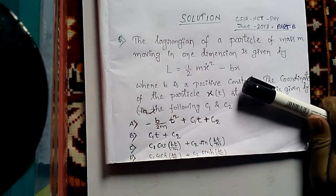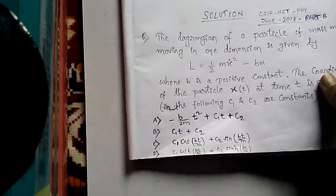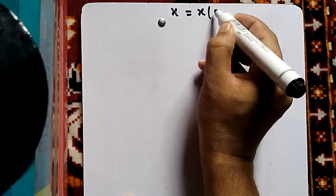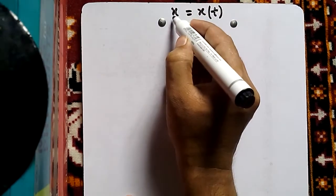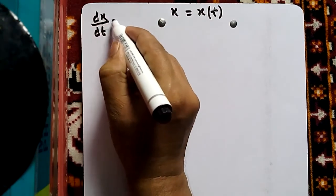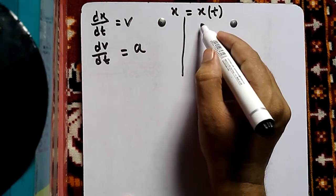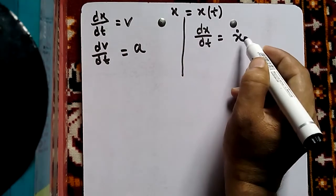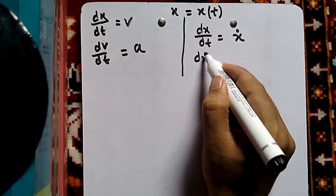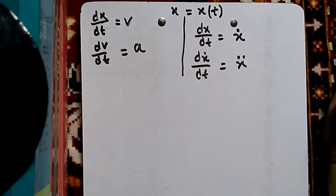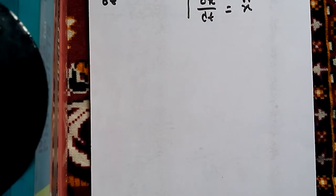To find this x, we will use Lagrange's equation. We will put the value of L inside Lagrange's equation and then find the solution for x. Before that, note that x is the same as x(t). We know dx/dt is the velocity and dv/dt is the acceleration. Similarly, in classical mechanics, dx/dt is written as x-dot, and dx-dot/dt is x-double-dot, which is the same as acceleration. We will be using these notations.